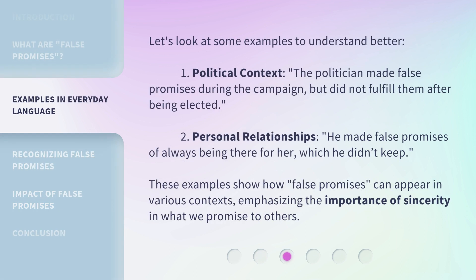Let's look at some examples to understand better. First, in a political context: the politician made false promises during the campaign but did not fulfill them after being elected. Second, in personal relationships: he made false promises of always being there for her, which he didn't keep. These examples show how false promises can appear in various contexts, emphasizing the importance of sincerity in what we promise to others.